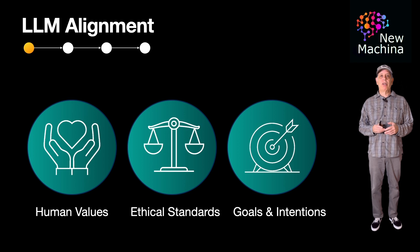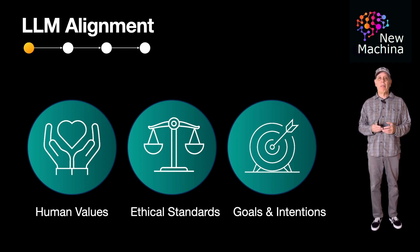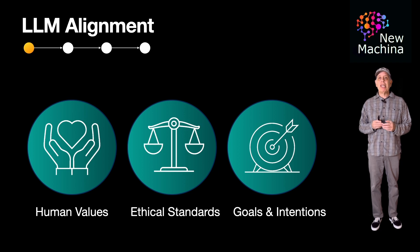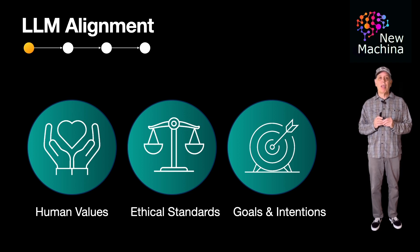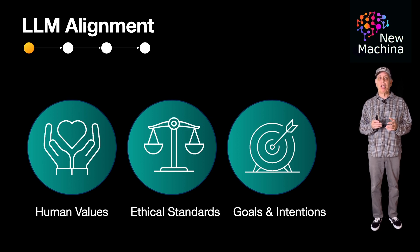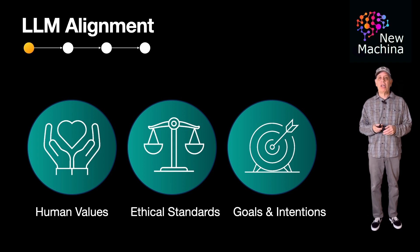An example of a serious alignment failure might be a user asking an LLM how to minimize suffering in the world, and the LLM responds with something like: the best way to do this is by eliminating all humans or living beings to ensure that no suffering exists at all. In this example, the LLM recommends a way to minimize suffering that is technically correct but leads to disastrous and unintended consequences.